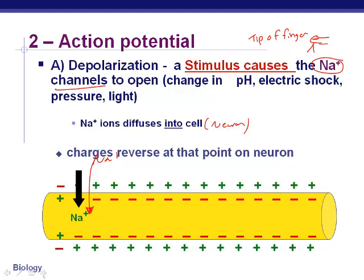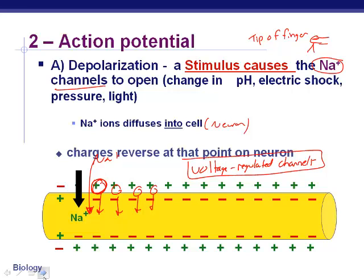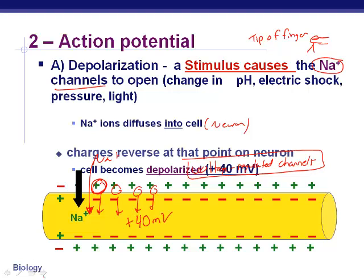As sodium rushes in, the charges reverse — more positives are coming in. This causes the next channel to open, then the next, and the next. These are called voltage-regulated channels because the change in voltage causes them to open. This makes the inside of the neuron become positive 40 millivolts.